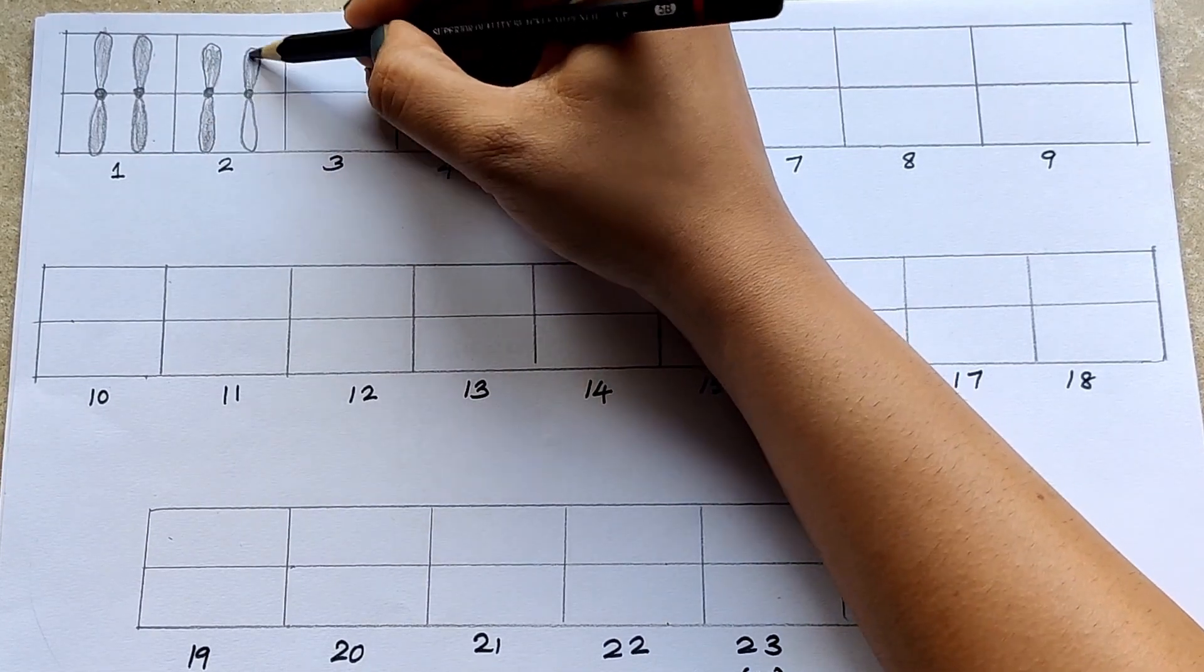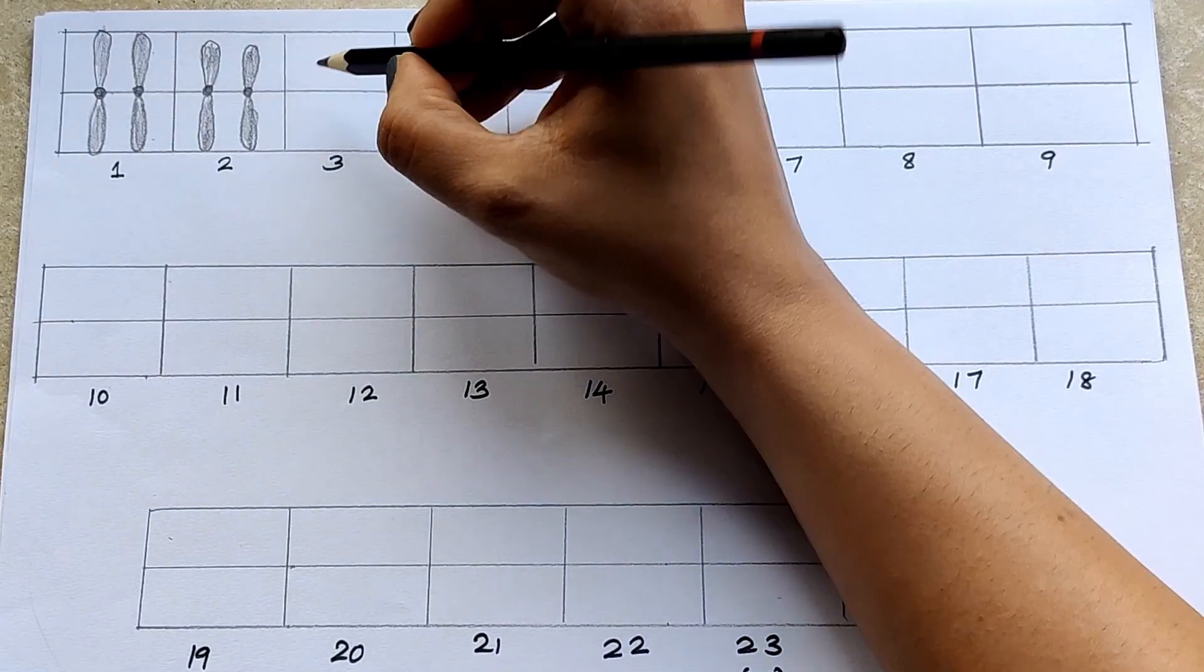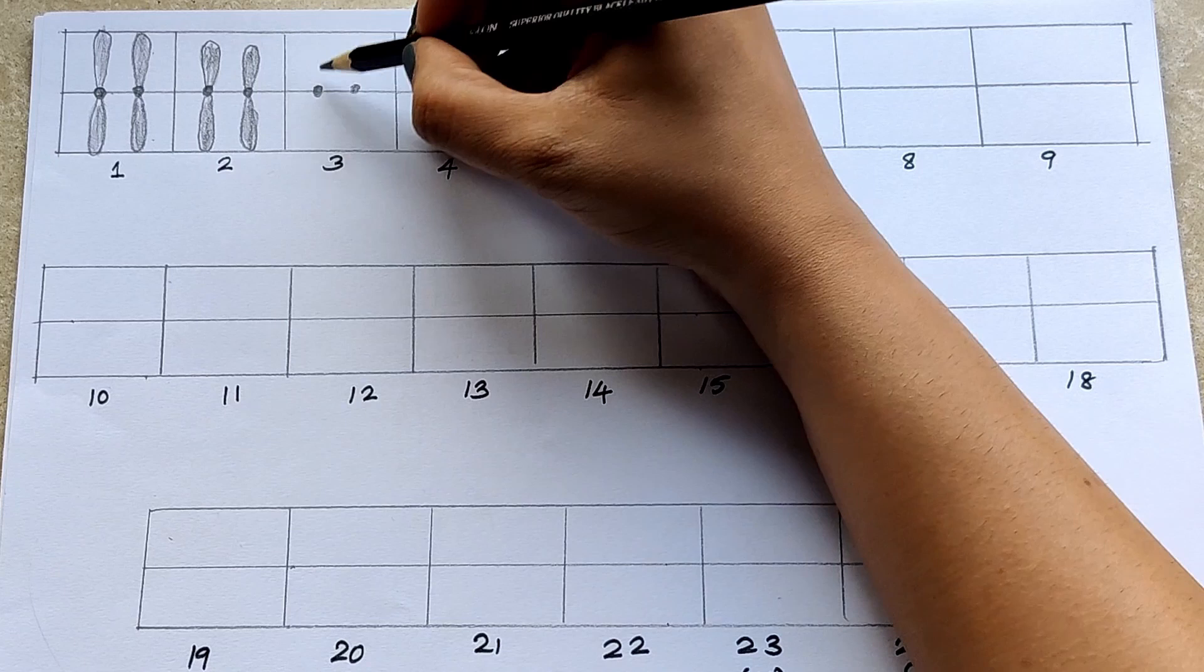P-arm is actually abbreviation for petite meaning short, while the other arm is named q-arm.